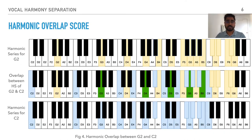We introduced a measure for harmonic complexity called harmonic overlap, which describes how difficult it is to separate any two notes being played together. For example, two people singing an octave apart are likely more difficult to separate than two people singing a third or a fifth interval.